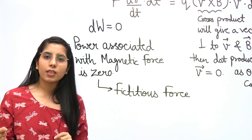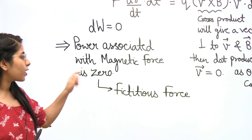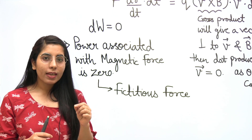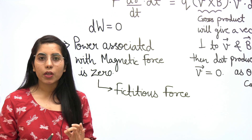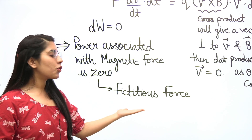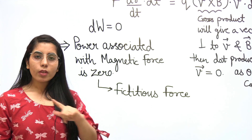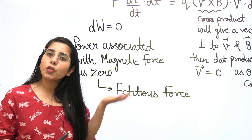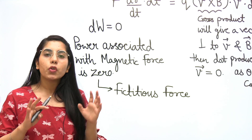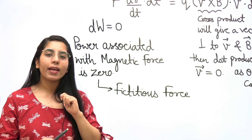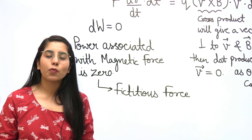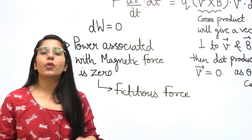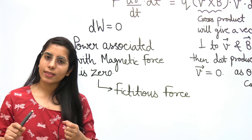So what is the power associated with the magnetic force? That is 0. For any force associated with which the power equals 0, you can call it a fictitious force. So if you see the word 'fictitious force' written somewhere, or this conclusion is given, you will know that the power associated with the magnetic force equals 0. And what kind of field were we discussing? Right now we are talking about magnetostatics.